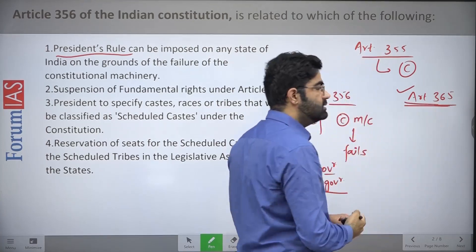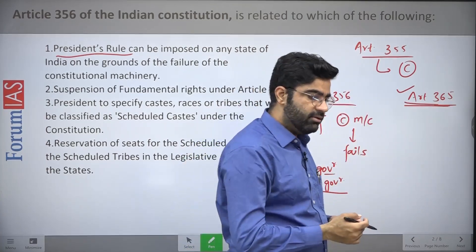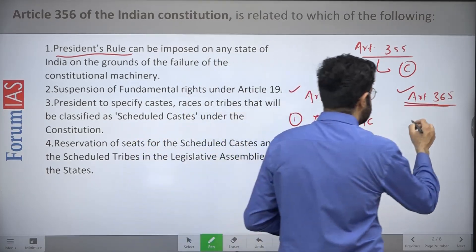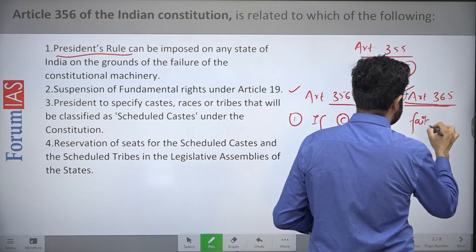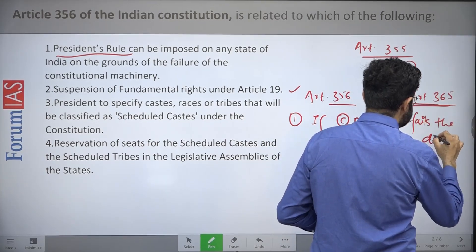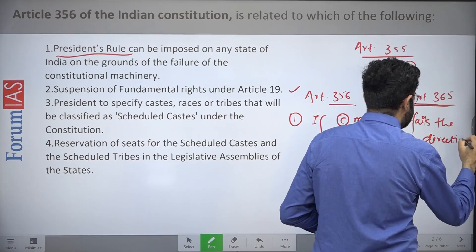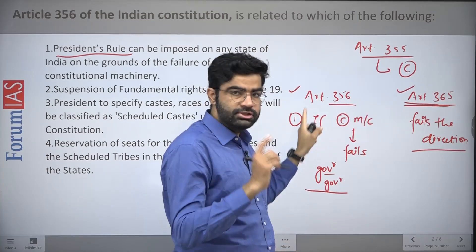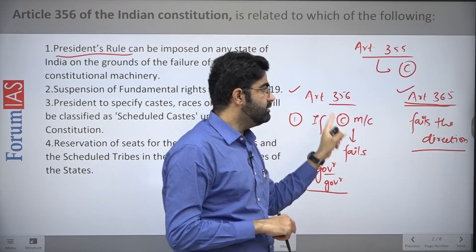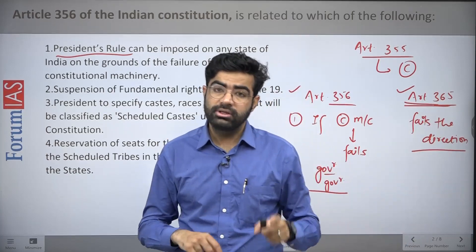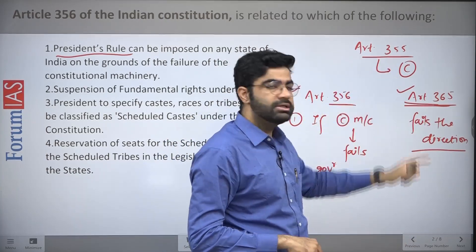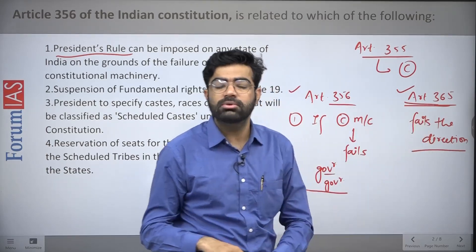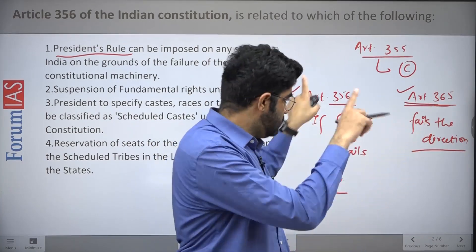The second condition is mentioned in Article 365: if any state fails to comply with the directions of the Central Government, President's Rule can also be imposed there. So remember, President's Rule is mentioned in two places — the first condition in Article 356 and the second condition in Article 365. Article 355 states the duty of the Centre to ensure states run their administration according to the Constitution.